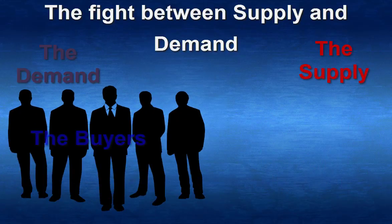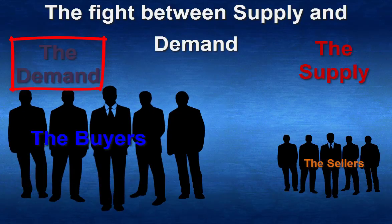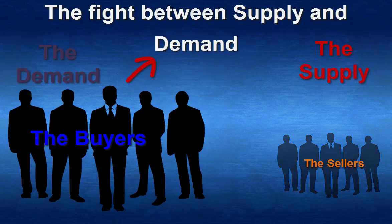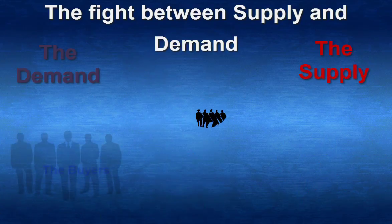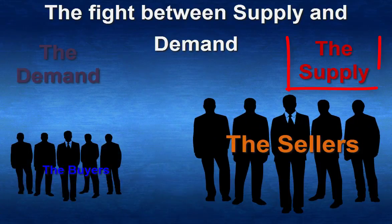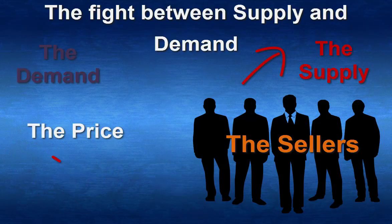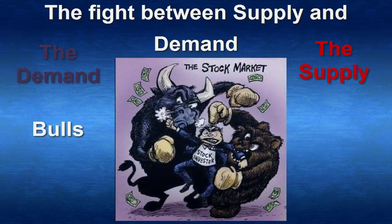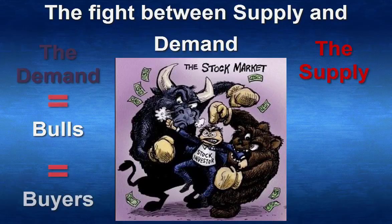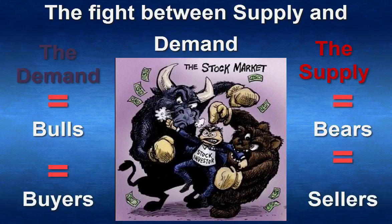When there are more buyers than sellers, the demand increases, and as a consequence, to meet the demand, the price must increase too. At the opposite, when there are more sellers, the supply increases, and as a consequence, to permit the sellers to be able to sell, the price must decrease. There is always a fight between the bull, representing the buyers or the demand, and the bears, representing the sellers or the supply.